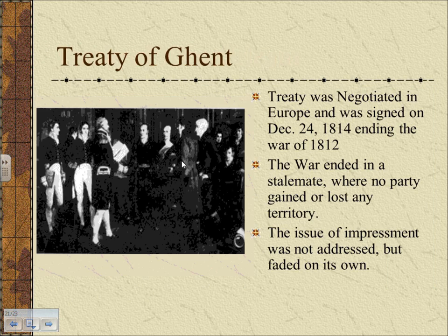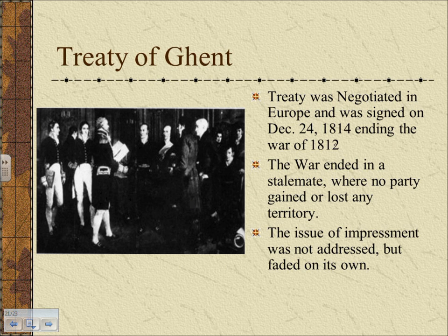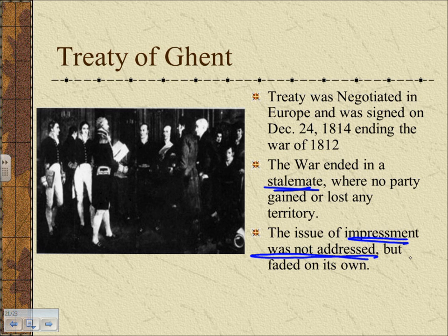As the war dragged on as a stalemate, the Treaty of Ghent was negotiated in Europe and signed December 24, 1814, officially ending the War of 1812. The war ended in a stalemate — no one won or lost; they went back to pre-war status quo, with everyone returning to their individual lines. Oddly, the treaty did not address impressment — that issue just faded on its own over time. But the Treaty of Ghent did not actually end the war's most famous battle.